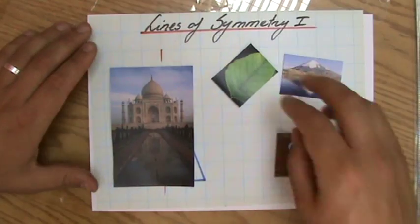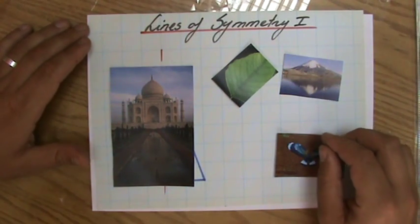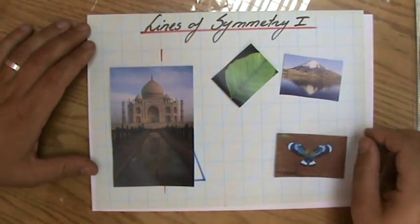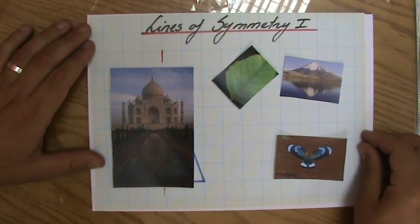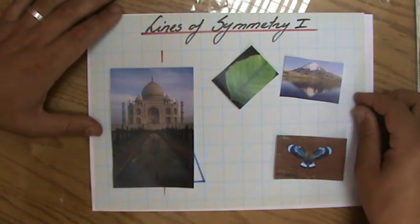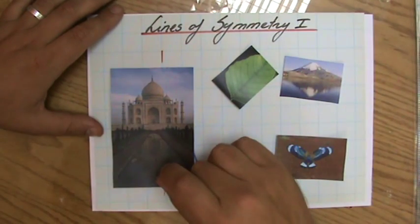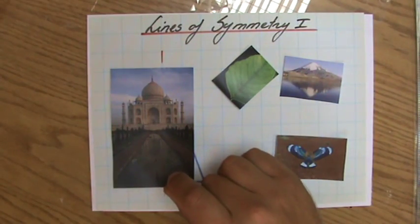Lines of symmetry, that was that. One more video, where we're going to have a look at squares and rectangles, and their lines of symmetry. I hope to see you there, because a lot of students are confused when it gets to the lines of symmetry, especially those of a rectangle. Next video.